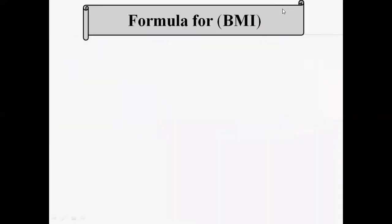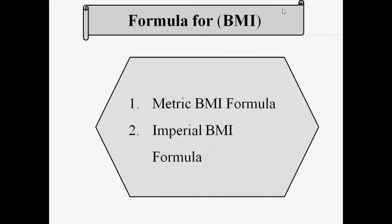For the calculation of BMI, two formulas can be used: the metric BMI formula or the imperial BMI formula. In the previous lecture, we calculated BMI using the metric formula. But in this lecture, we will find out the BMI by using the second formula — the imperial BMI formula.